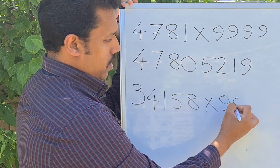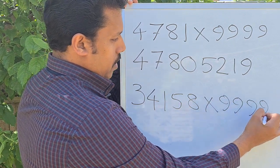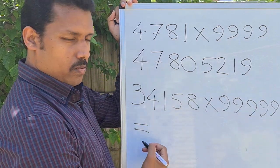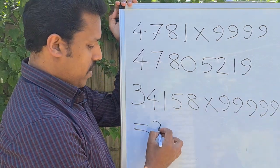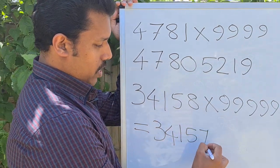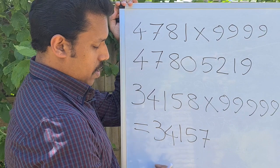Let's take one more example: 34158 times 99999. There are five digits here, five nines here. So you might know the answer now, isn't it? 34157, take away one from it, you get seven.